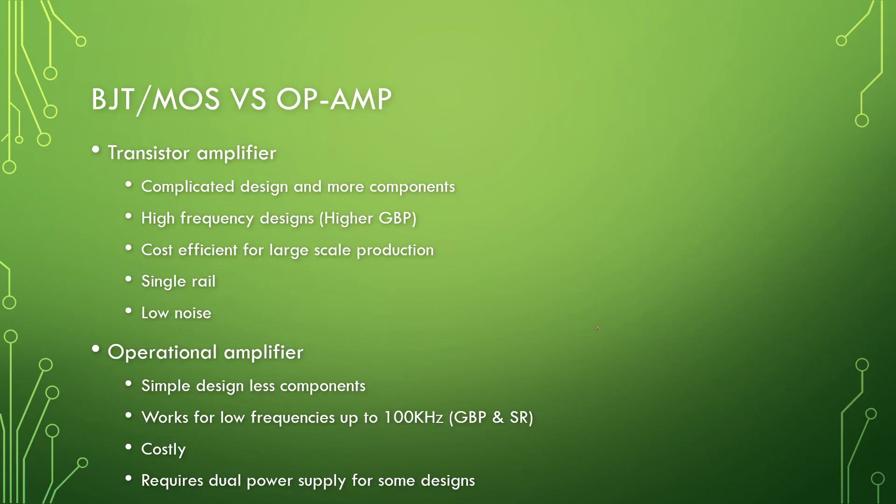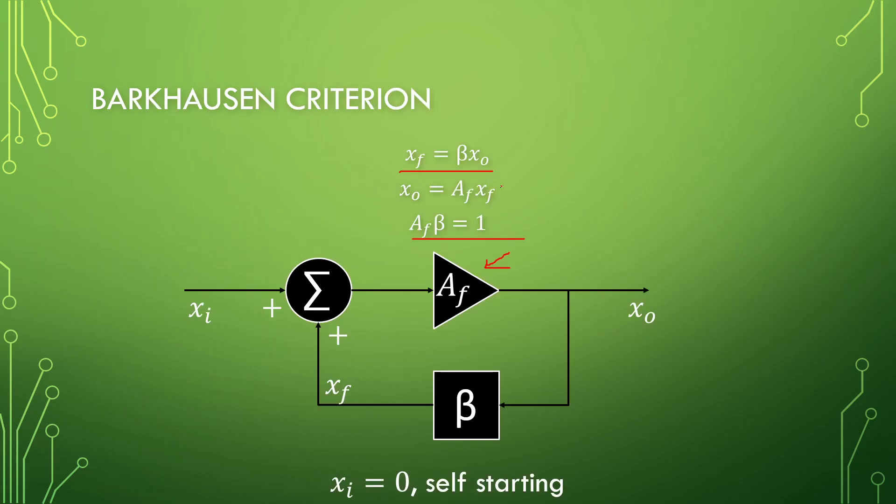So that is Barkhausen's criterion. We will be looking at the actual implementation of this in the wine bridge oscillator and the Colpitts and Hartley. So if you want to see any mathematics on how this is done, it will be in some of the following videos. But first you need to understand what Barkhausen's criteria actually want from you.